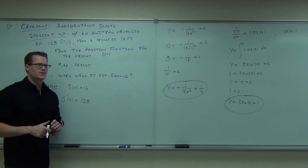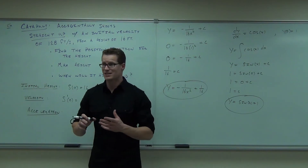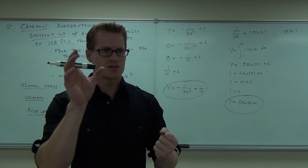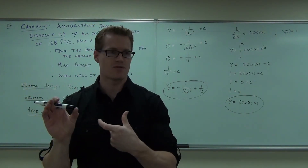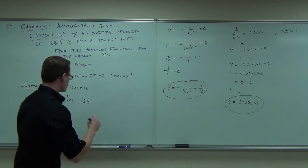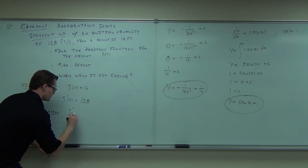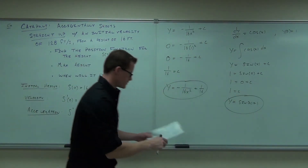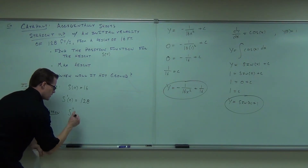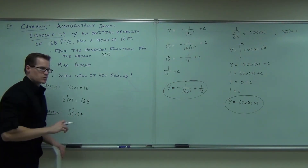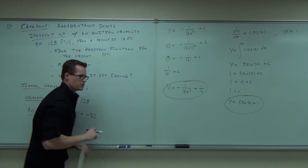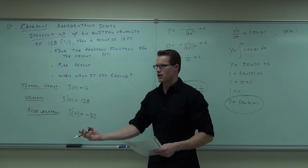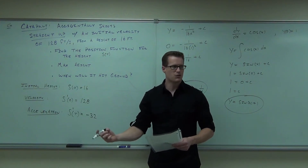Acceleration. What's acceleration as it relates to a position curve? Position function is a position. The first derivative gives you velocity. The second derivative gives you acceleration. So here's what we know: the second derivative is negative 32 feet per second squared. Why is it a constant? Well, gravity doesn't change for us. So it's going to be pulling down at a constant acceleration of negative 32 feet per second squared.